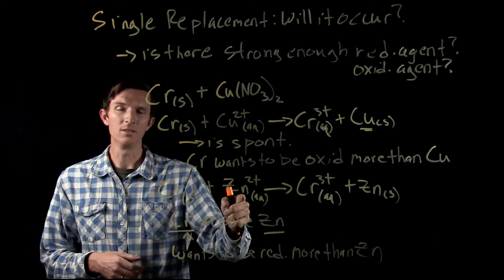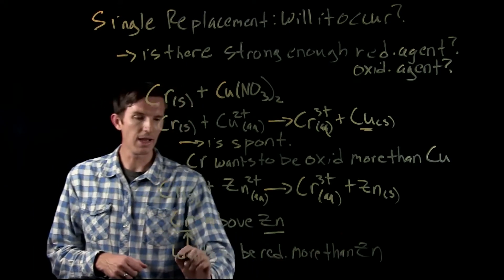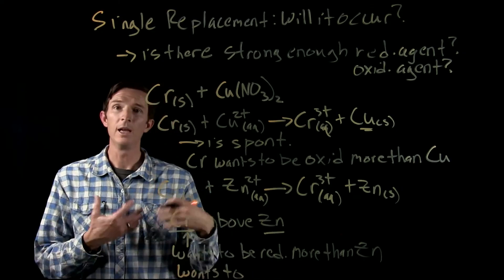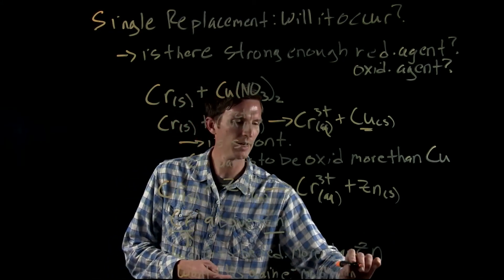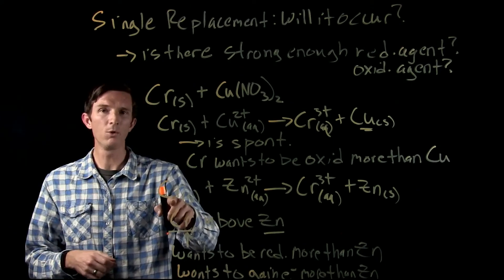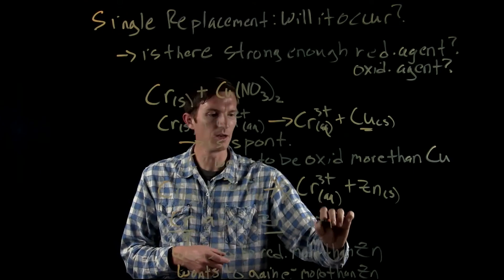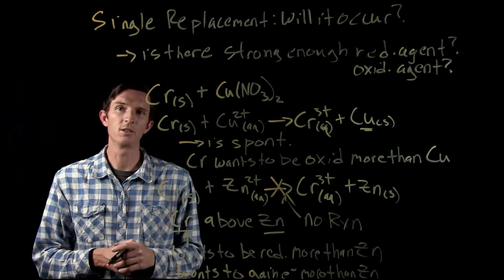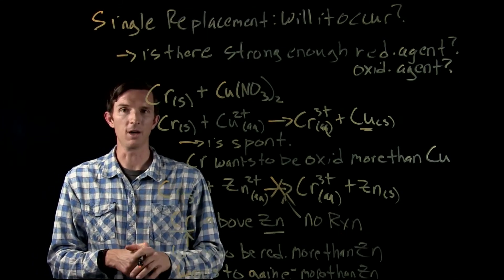We could also look at it the other way: zinc is not strong enough of an oxidizing agent to cause chromium to be oxidized. Because chromium wants to gain electrons more than zinc does. If something wants to gain electrons more, it's not willing to give them up. So chromium wouldn't give its electrons up and give them to zinc. Here we would get no reaction — because chromium is not a strong enough reducing agent to cause reduction in zinc, or looking at it the other way, zinc is not a strong enough oxidizing agent to cause chromium to be oxidized.